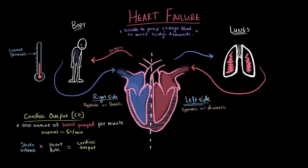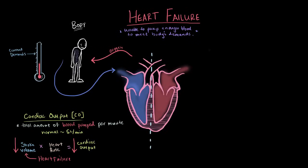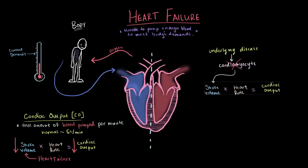If you change either stroke volume or heart rate — for example, lowering stroke volume — cardiac output will also go down. That's what happens with heart failure: cardiac output is lower because the heart isn't pumping as much blood per minute, usually due to a lowered stroke volume. Heart failure is usually considered a secondary disease, caused by a pre-existing underlying disease that affects cardiac output — specifically, diseases that cause death of cardiac muscle cells, called cardiomyocytes. When those muscle cells die, the heart gets weaker, stroke volume drops, and cardiac output falls.